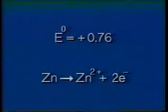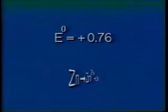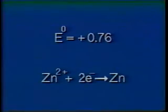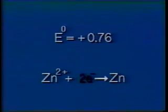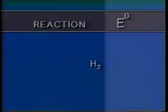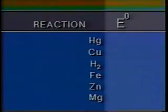Because chemists like to standardize, and since all reactions are reversible, they prefer to show half-cell reactions as reduction reactions. By reversing the equation, we must also reverse the sign of the half-cell potential.